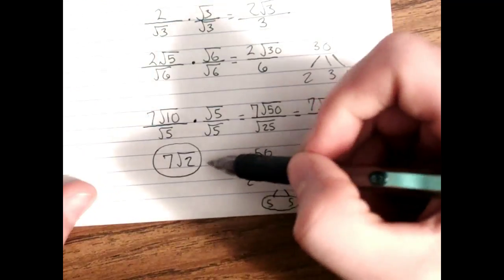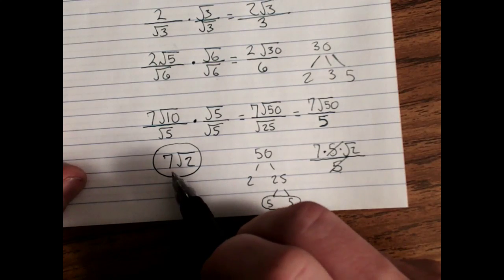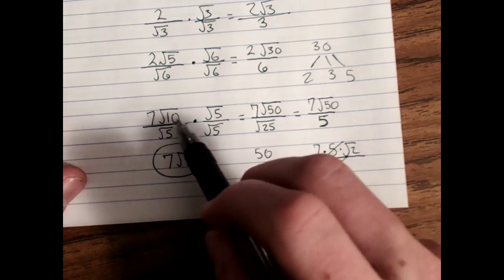And you've got to admit that 7 root 2 is nicer, neater, easier to look at than 7 root 10 over root 5.